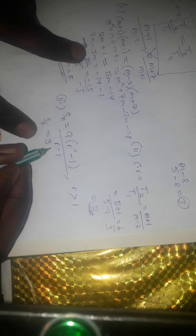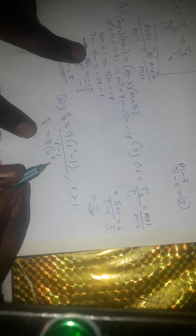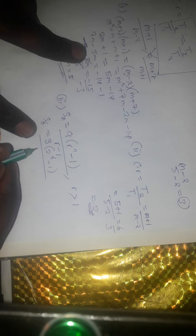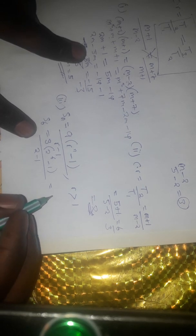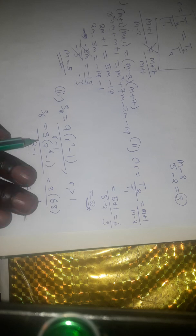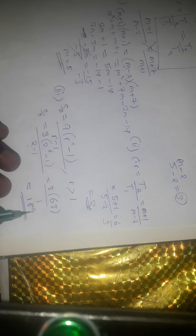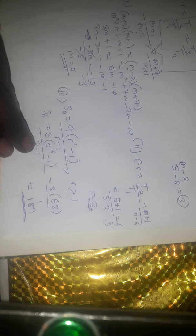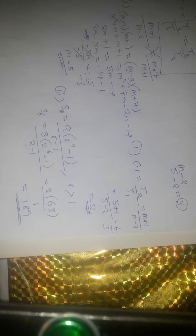We substitute: 3 times (2 to the power 6 minus 1) divided by (2 minus 1). 2 to the power 6 gives us 64, minus 1 gives us 63. Multiplied by 3 we get 189, which is being divided by 1. So 189 is the solution for the sum of the first six terms — that is the solution for the last part of Question 5. Thank you.